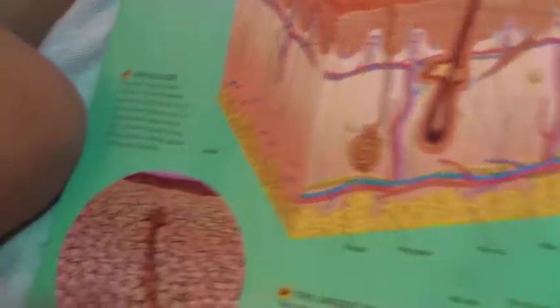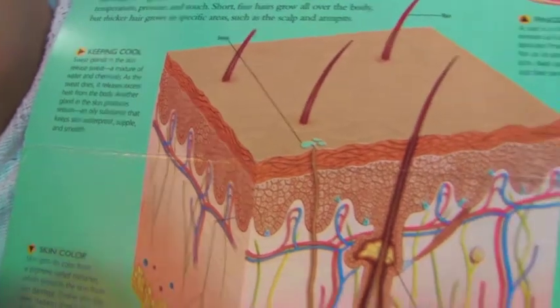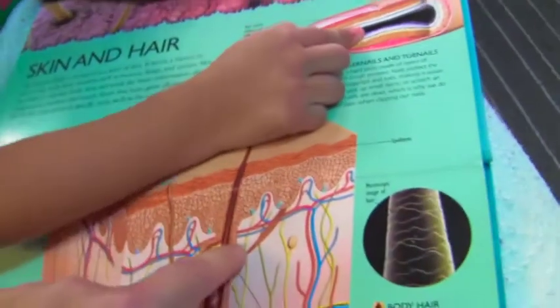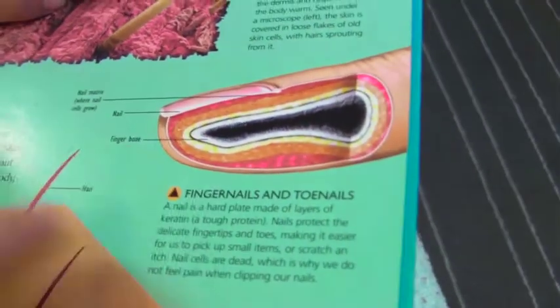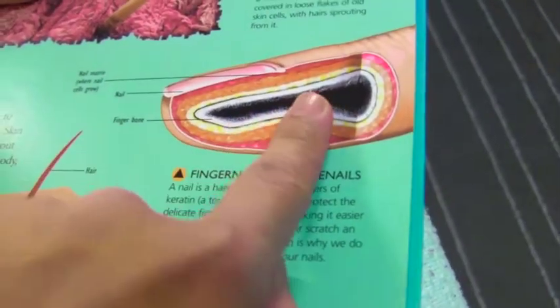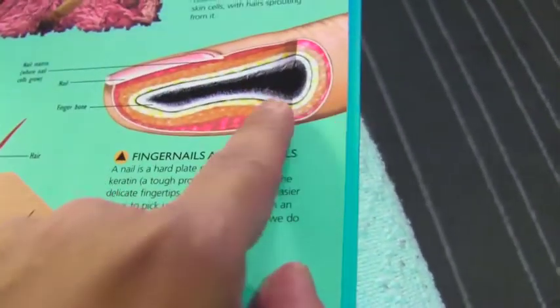It shows here the skin, and the skin has hairs. It looks like there is a follicle — this is a hair follicle. And this is the fingernail — like this one. It shows you what's inside a finger.